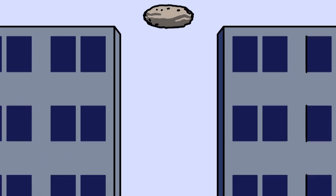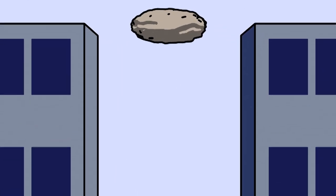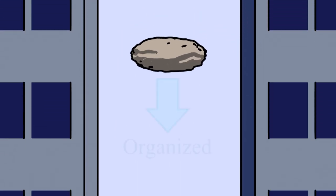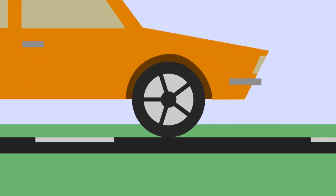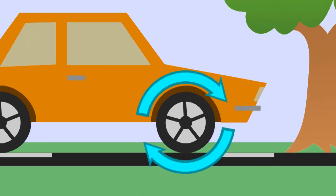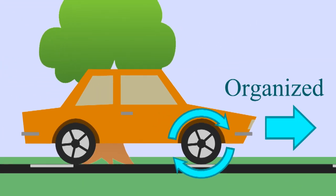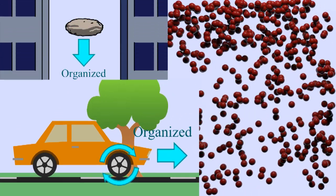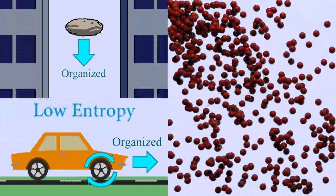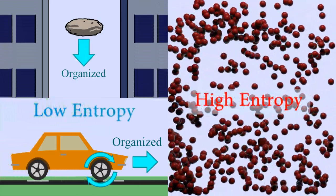There are other kinds of motion. If you drop a rock from a building, the whole rock falls down. This is organized motion. If you accelerate a car, the whole wheel rotates and the car moves forward. This is organized motion. Trillions of molecules are all moving in the same direction. Organized motion is low entropy. Random chaotic motion, like heat, is high entropy.